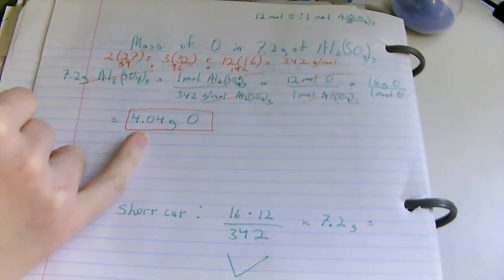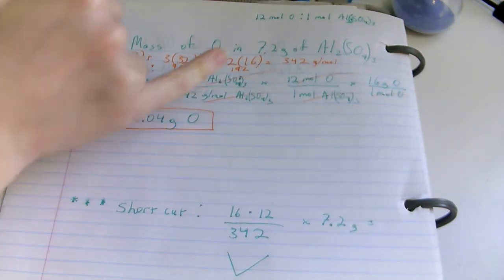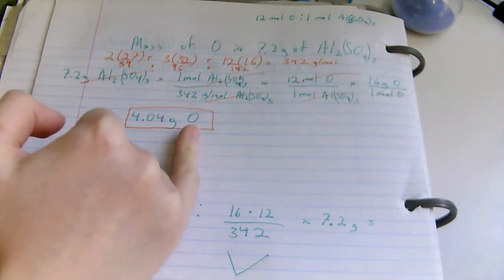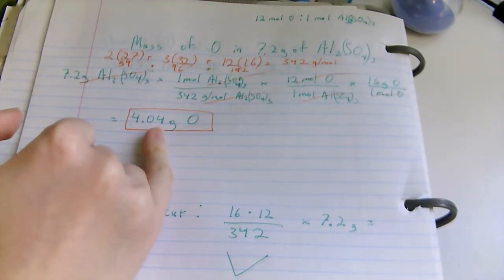Make sure your answer makes sense. It makes sense if the given mass is less than the gram formula mass, that the mass of oxygen as your result should also be smaller.